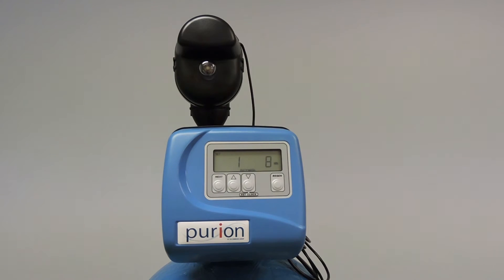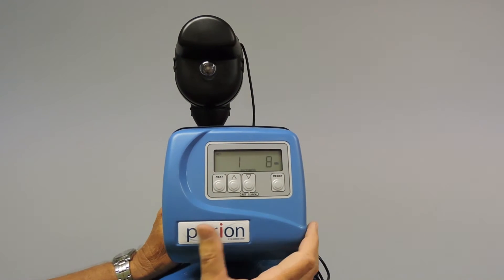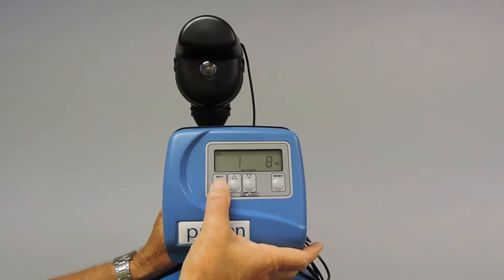Now we're up to our cycle times. This is where we put all our timing for each cycle through the regeneration. We start off with a backwash. Eight minutes is our generic time that we use for the softeners. So we'll accept that.